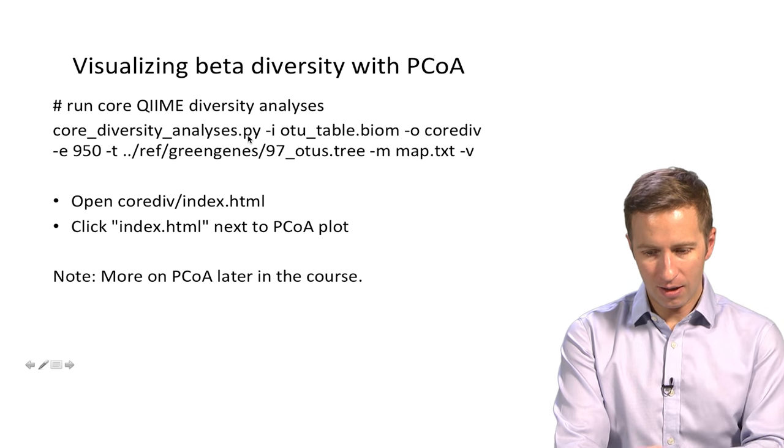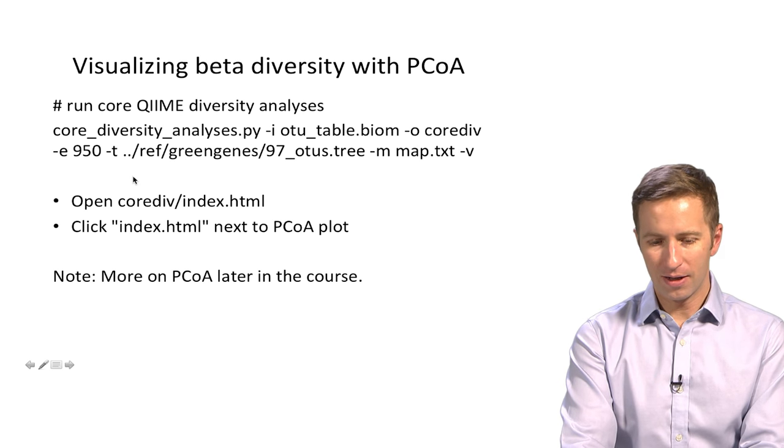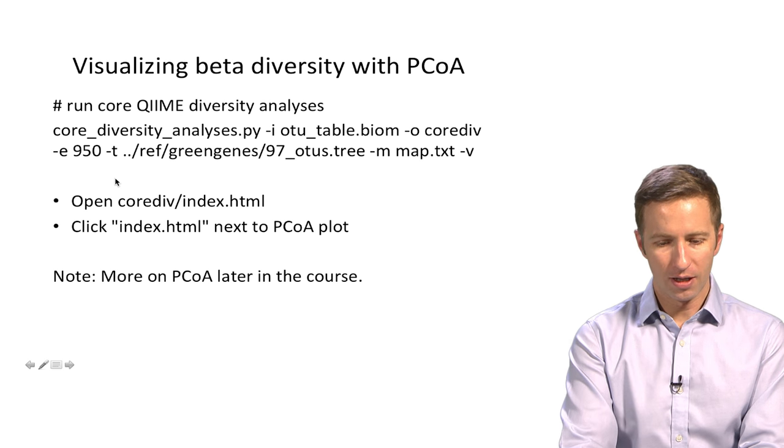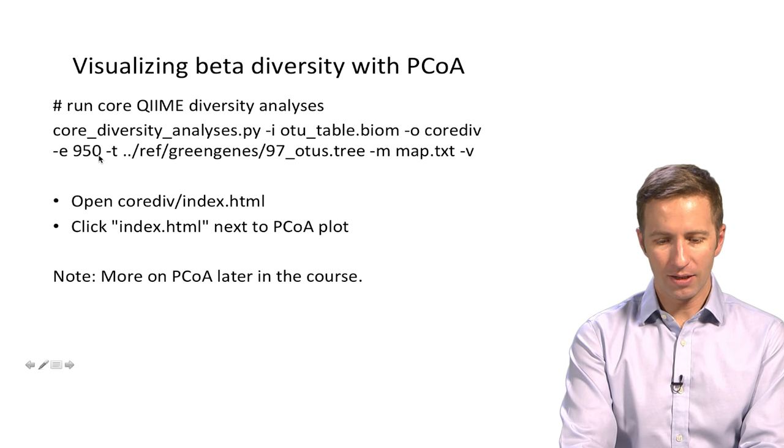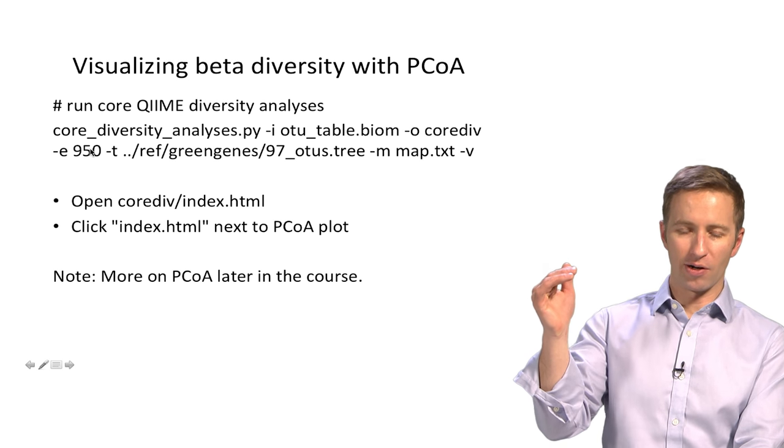So the easiest way to generate beta diversity plots in QIIME is actually through the core diversity analyses script. To run that, you pass in an OTU table, an output folder. You have to tell it at what level to rarify the data.